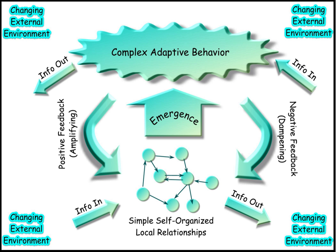Systems science is an interdisciplinary field that studies the nature of systems—from simple to complex—in nature, society, cognition, engineering, technology and science itself. To systems scientists, the world can be understood as a system of systems.